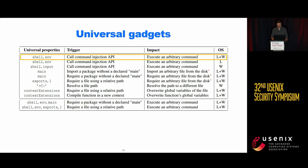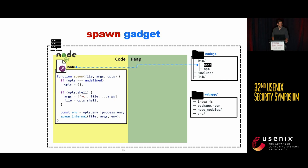The first gadget is the spawn function, which executes new processes. Let's look at the code — details are not important here, but we see that the properties shell and env can be undefined, and there is a flow from these properties to an internal function call, which is actually exploitable.